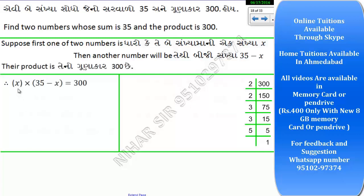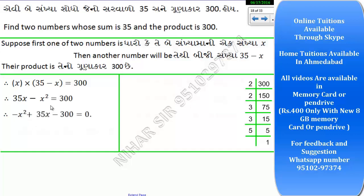Here I will write: x into (35 minus x) is equal to 300. Expanding: 35x minus x squared equals 300. Rearranging, we get minus x squared plus 35x equals 300.